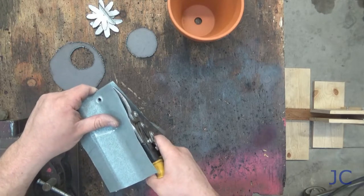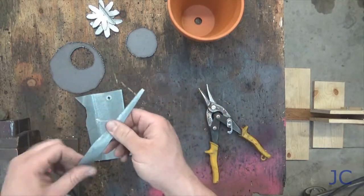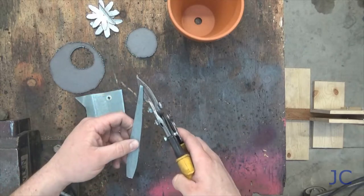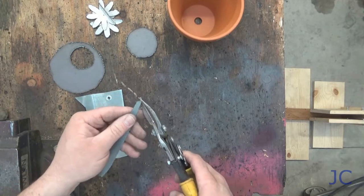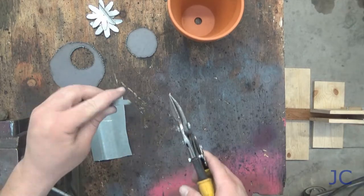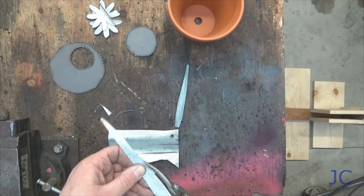Now we're going to cut out the leaves. They just need to be thin strips of the same sheet metal we used for the petals. Cut them to look kind of like a leaf with a point on the end. There's one leaf and we're going to make six in total.